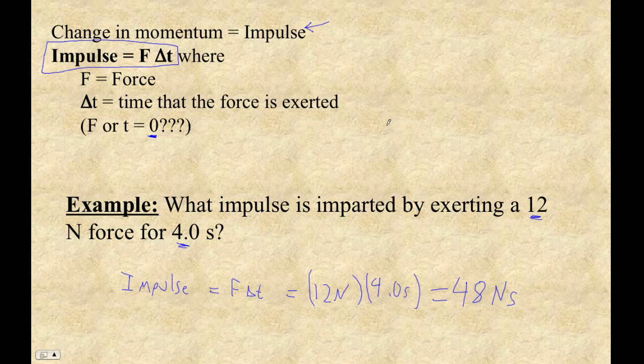Now, before I go to the next type of impulse problem, let's look at newton seconds. A newton is a kilogram meter per second squared, because F equals M A. That's a newton, and a newton times a second is a newton second.